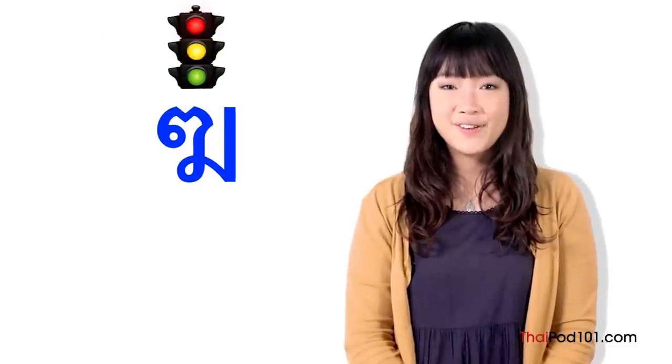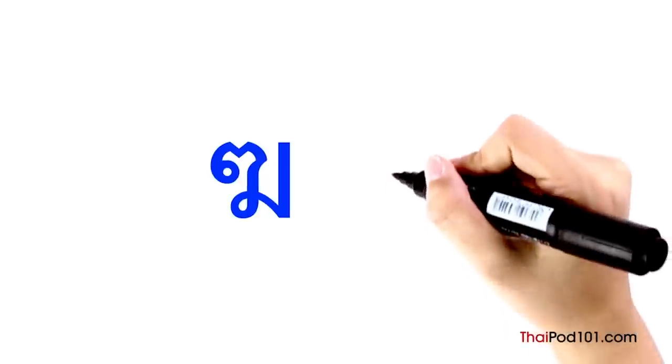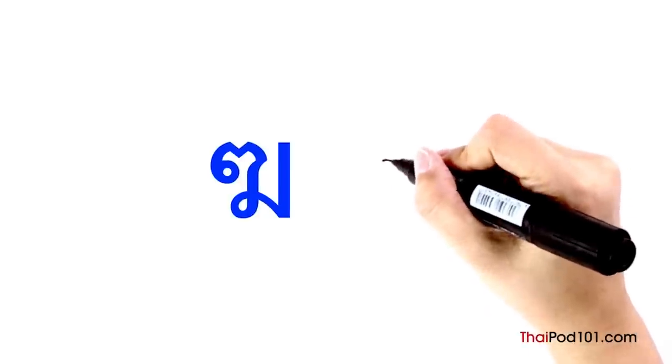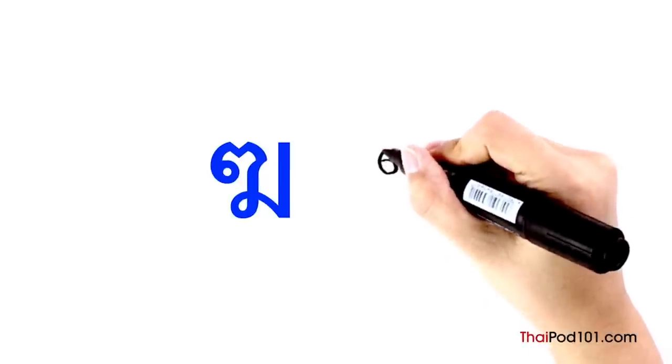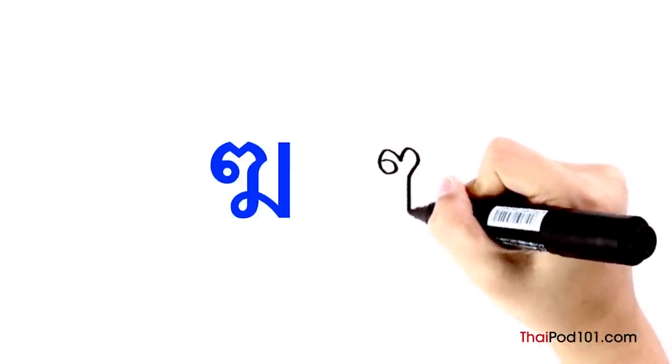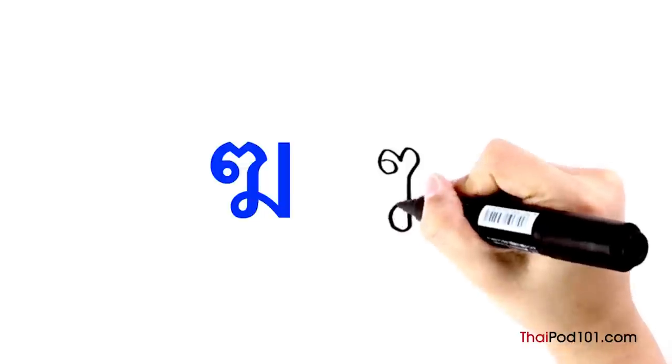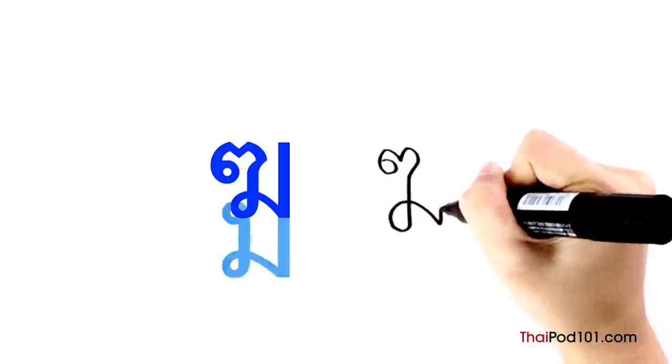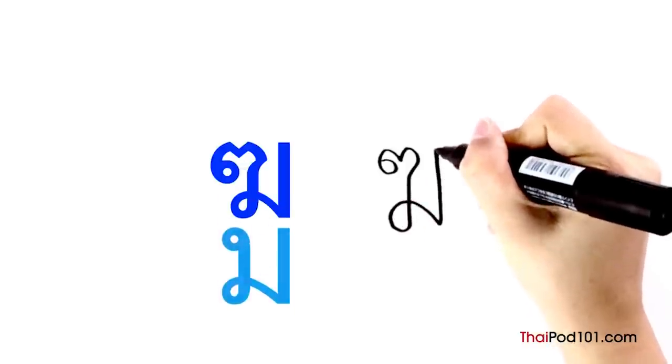KOKAI makes an initial sound K and a final K stop. Start with a small clockwise head, make a curved line with an indentation on top, then continue with the shape of the letter MOMA.